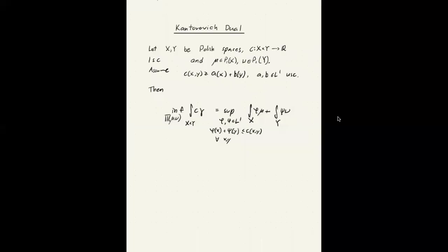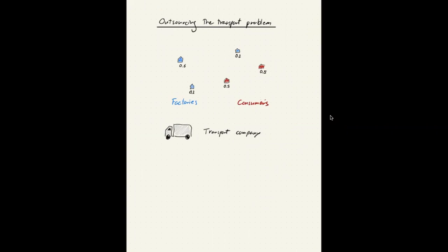Now one way of thinking about this is the following. So here we have our Kantorowicz problem. I got my factories from the previous video here. My blue houses are factories, each factory producing a certain amount of goods. Then I have my consumers. The red houses are here with a certain demand at each point.